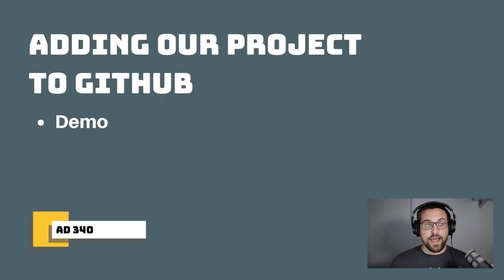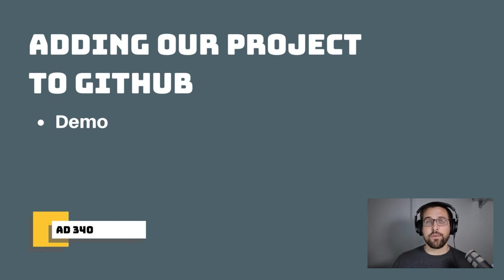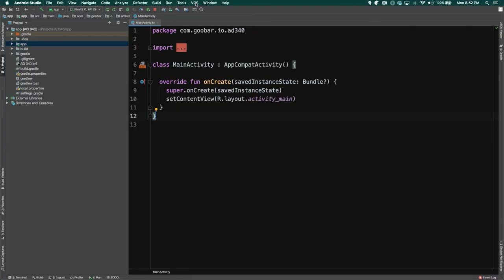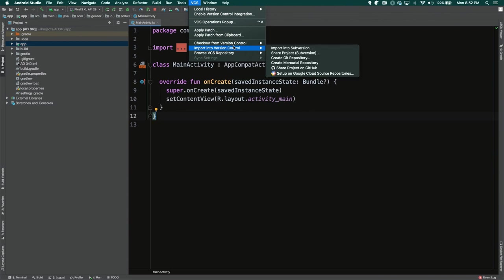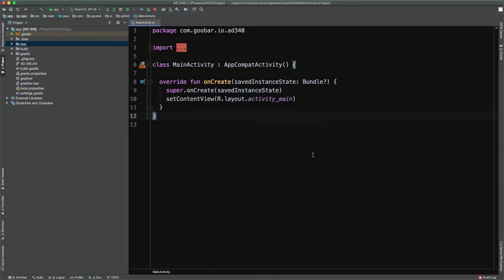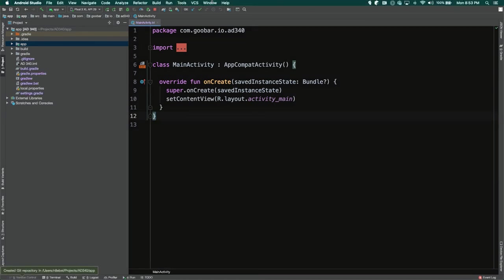Now we have our simple Android app ready. We want to walk through how to get this into GitHub. There are a variety of ways to do this — from the command line using Git you could CD into your current project directory, initialize that directory as a Git repo, and push that up to your GitHub remote. If none of that makes sense, we're going to walk through how to push the code to GitHub directly from Android Studio. In Android Studio, go to the menu and click on the VCS tab, which stands for Version Control System. Scroll to the bottom and click 'Enable Version Control,' and select Git since we'll be using Git and GitHub for this course.